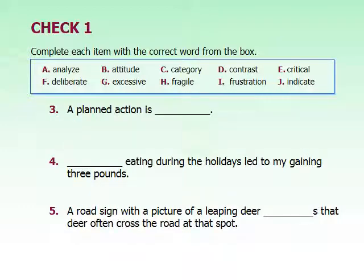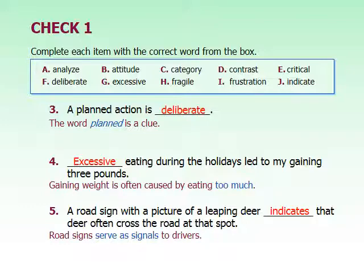'A planned action is blank.' 'Blank eating during the holidays led to my gaining three pounds — what kind of eating makes you gain weight?' 'A road sign with a picture of a deer blank that deer often cross the road at that spot — what do signs do?' The answers are: deliberate — something planned is on purpose; excessive — eating too much makes you gain weight; and indicate — signs indicate things, they give you information.